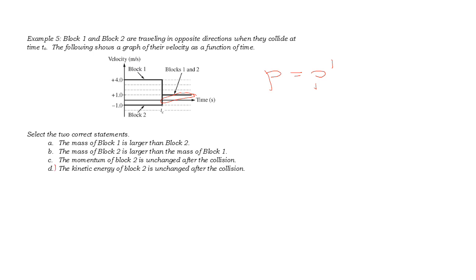Instead, the correct choice is choice D. That the kinetic energy of block two is unchanged in this particular collision. Keep in mind that kinetic energy is a scalar. It doesn't have direction. And it's equal to one half M, V squared. So if the velocity was one backwards prior to the collision, and it's one forward after the collision, then the kinetic energy would have stayed the same.